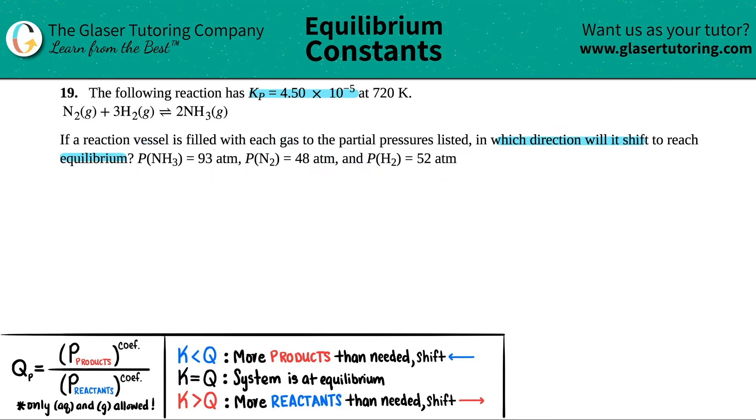The first thing is that I see that I have a balanced equation. I got these coefficients in the front. So the first thing I'm going to do is write out that equation. So I got N2, that's a gas, plus 3H2, that's also a gas, will come to equilibrium and produce 2 NH3, and that's a gas.